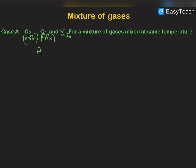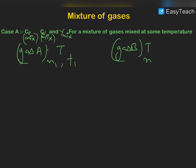Let us suppose that gas A has a temperature of T, the number of moles are N1, and the degree of freedom is F1. Gas B has temperature T, number of moles N2, and degree of freedom F2. Now if we mix these two gases, the heat will not flow because their temperature is the same, and we can say that the internal energy of the mixture will be the sum of the internal energies of the two gases.